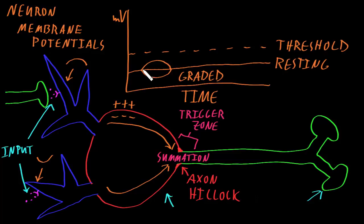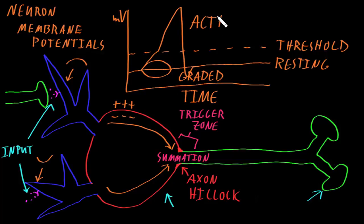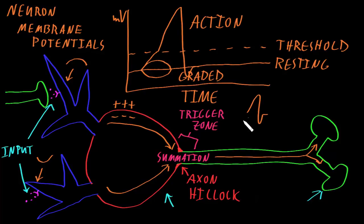If the graded potential changes cause the membrane potential at the trigger zone to cross the threshold potential, a different kind of membrane potential change occurs that has a totally different shape, which is called an action potential. The action potential will then be conducted from the trigger zone all the way down the axon to the axon terminals. That waveform of the action potential will look the same as it moves down the axon — similar shape whether checked near the trigger zone, halfway down, or close to the axon terminals.